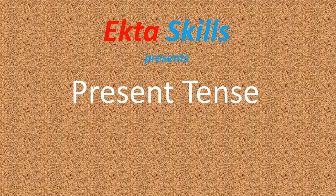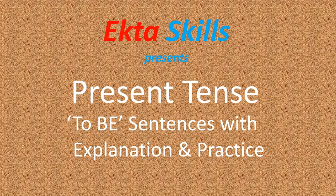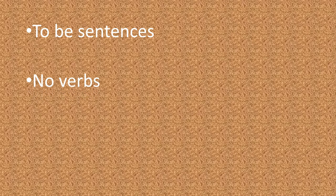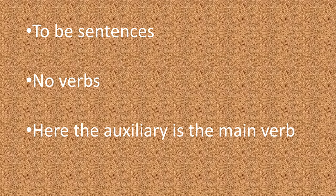We will learn 'to be' sentences with explanation and practice. In 'to be' sentences, there are no verbs because there is no action word in the sentence. Here, the auxiliary is the main verb. To be sentence में verb यानि की क्रिया नहीं होती है। यहाँ auxiliary ही main verb का काम करती है, यानि की helping verb भी main verb होता है।